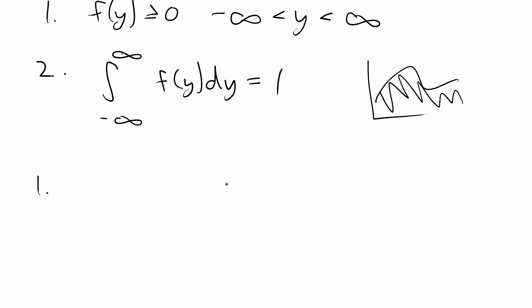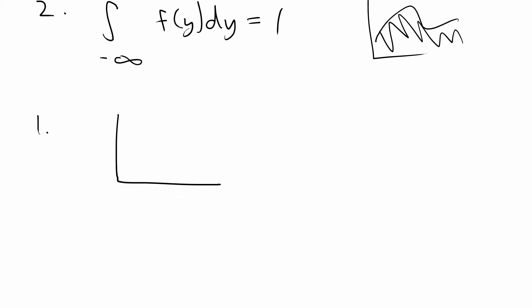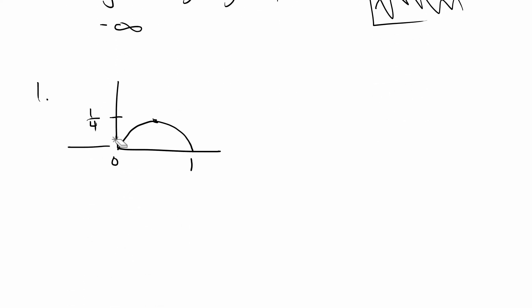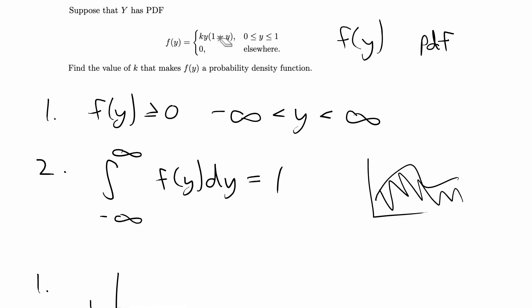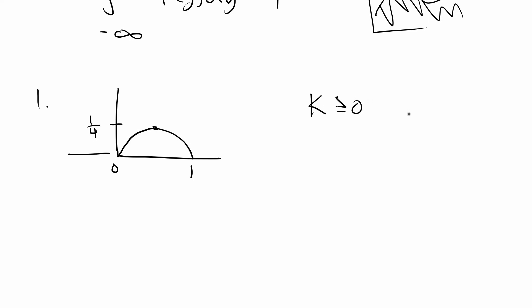For the first condition, the function has to be positive over all values of y. If we plot the original function, it's going to be 0 everywhere except from 0 to 1. From 0 to 1, ignoring k for a moment, y times (1 minus y) gives us a positive curve — basically a shape reaching a peak at one quarter. So any positive value of k will keep the function positive on that interval. As long as k is greater than or equal to 0, the first condition is met.